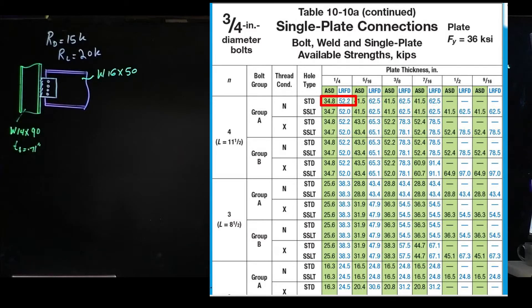Then you come down to column N and make sure your column is 4—we're going to use four bolts. Then we go to the next group of bolts, which is group A. The thread type is N, and it's a standard type hole.